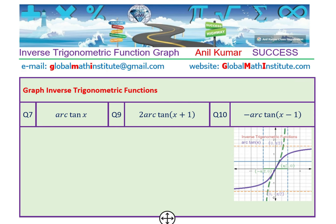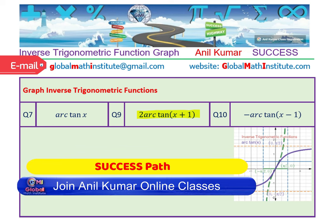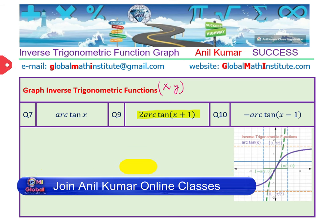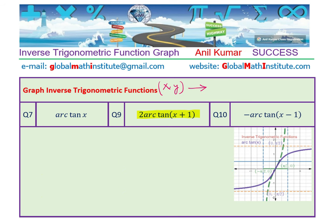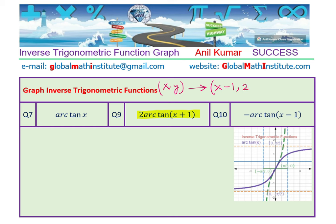Now we will consider 2 arc tan(x plus 1). The transformation involves a vertical stretch by a factor of 2 and a horizontal translation one unit to the left. So the x values become x minus 1, and the y values become 2 times y. The arc tan x critical points were: minus 1 maps to minus pi by 4, origin is at 0, and 1 maps to pi by 4, with horizontal asymptotes at minus pi by 2 and pi by 2.